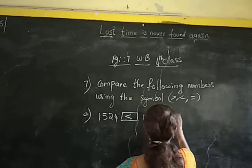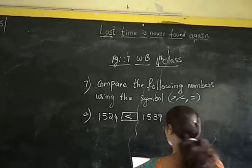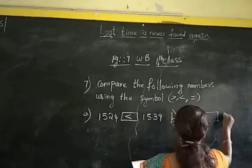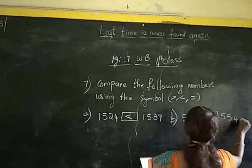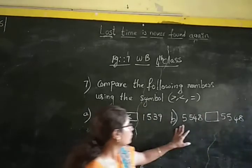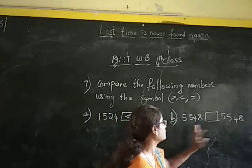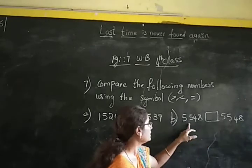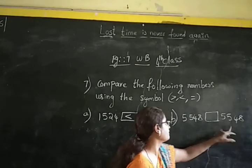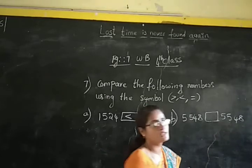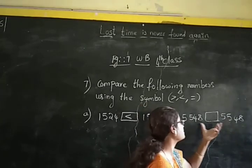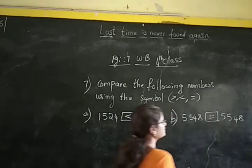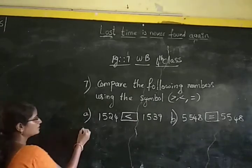Now the next sum: 5,548 and 5,548. Both numbers have the same digits in all places — 5 in thousands, 5 in hundreds, 4 in tens, and 8 in ones. So these two numbers are equal. We place the symbol equal to.